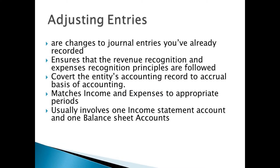Adjusting entries are changes to journal entries you've already recorded. If you go over from our last video presentation, there is the trial balance which has two columns — debit and credit. This will now be followed by the adjusting entries to correct the unadjusted balance into the adjusted trial balance. This also ensures that the revenue recognition and expense recognition principles are followed, and converts the entity's accounting record to accrual basis of accounting.